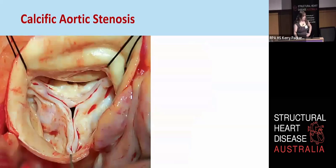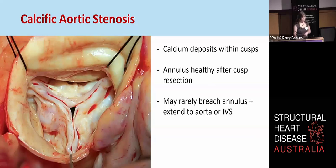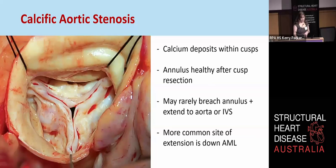In terms of calcific aortic stenosis, this occurs when we have age-related calcium deposits within the cusps. Generally the annulus itself is healthy and pliable, so with valve replacement and removal of the cusps we're able to maintain a healthy annulus. However, calcification can extend to the annulus, as well as beyond that to the aorta or the interventricular septum. More commonly, though, the extension of calcification goes down the anterior mitral leaflet in a sort of midline spine, and this doesn't usually project beyond halfway down the leaflet.